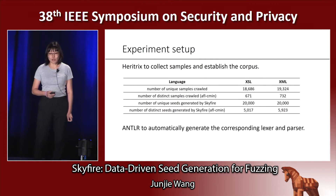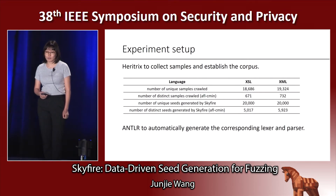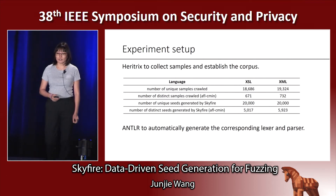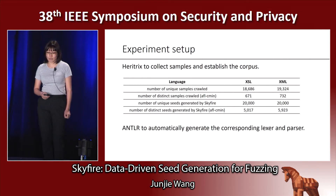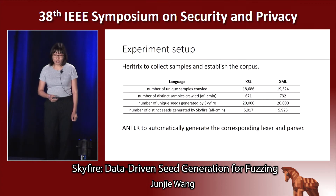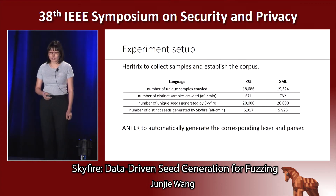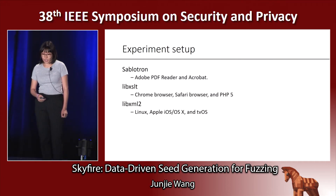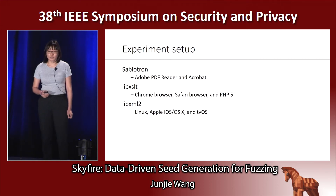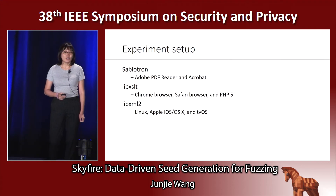To evaluate our approach, we use heuristics to collect samples and establish the corpus. In total, we crawled more than 18,000 unique XSL samples and more than 19,000 unique XML samples. To do a fair comparison, we use SkyFire to generate a similar number of unique samples — 20,000 unique XSL samples and XML samples. Our targets include two XSL engines, Sablotron and libXSLT, and one XML and HTML engine, libXML2.